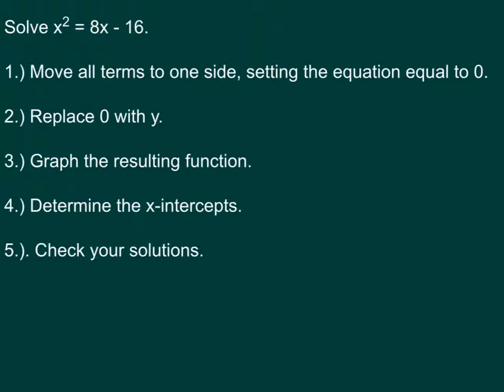Another example here. Solve x squared equals 8x minus 16. We're going to follow the same process. Now, we can move all the terms to whichever side we want. We can just graph the parabola, however it turns out. I'll move the x squared to the right. Even though I'm going to have a negative, that's going to be okay. So I'm going to subtract x squared from each side.